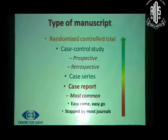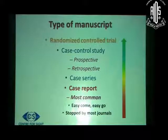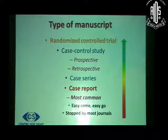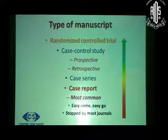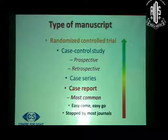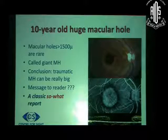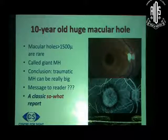Most of us start our writing careers with the case report — something looks very exciting to us and we want to share with our colleagues. But they are easy to write and also easy to reject. In fact, a lot of journals have actually stopped the submission of case reports in an effort to improve the impact factor. You have a better chance if you write a case series, more likely if it is prospective and controlled, and the best chance is obviously if it is a randomized controlled trial. For example, if we write about a huge macular hole due to trauma, we cannot conclude anything except that a traumatic macular hole can be really big — there is really no message to the reader. It is a classic 'so-what' report, ready for rejection.